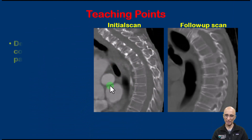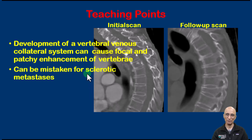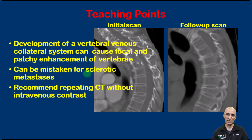The teaching points from this case: whenever there is obstruction of the proximal venous system, collateral vessels can involve the vertebral venous plexus, leading to focal patchy enhancement of the vertebrae that can be mistaken for sclerotic metastasis. If there is no prior imaging to compare, we can recommend a follow-up scan without intravenous contrast. If no sclerotic foci are seen on follow-up imaging, we can be confident that the pseudopathological enhancement was due to enhancement of the vertebral collateral venous system.